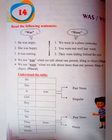Was and were are used in the past tense. When the sentence is in past tense, we use 'was' with he, she, it, girl, and boy.